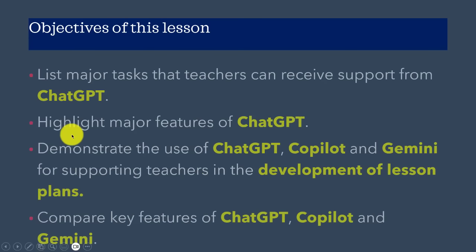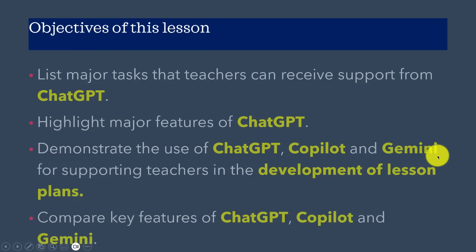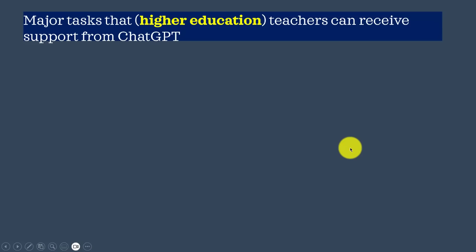So what are the objectives of the lesson? One: there are several tasks that teachers undertake in a higher education system, and we are going to look at those that ChatGPT can help us with. Then we will look at major features of ChatGPT, and then demonstrate the use of ChatGPT, Copilot, and Gemini. We'll also compare the features of ChatGPT, Copilot, and Gemini.